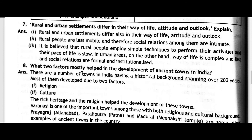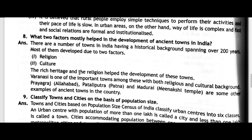Question number eight: What two factors mostly helped in the development of ancient towns in India? There are a number of towns in India having a historical background spanning over 200 years. Most of them developed due to two factors: religion and culture. The rich heritage and religion helped the development of these towns. Examples include Varanasi, Prayagraj (Allahabad), Patliputra (Patna), and Madurai with its Meenakshi Temple — all developed due to religion and culture.